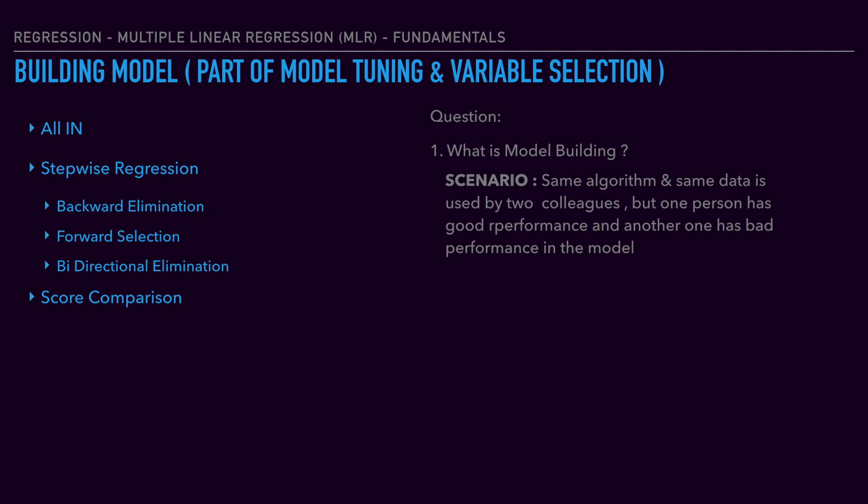Let's raise some questions and address them. First: what is model building? One algorithm, one data or another data, one performance and one output performance. That's why we can give all the dependent variables as input. The third question is, how does a model fine-tune? The answers are: first, all-in; second, backward elimination; third, forward elimination; fourth, bidirectional elimination — this is step-wise regression. The last one is score comparison.